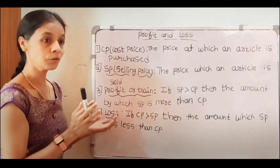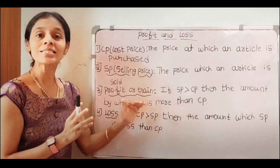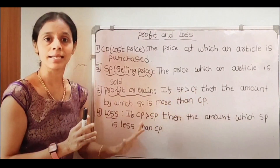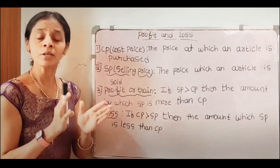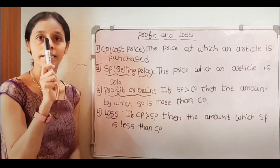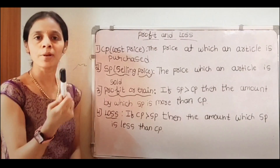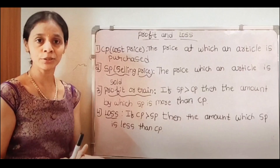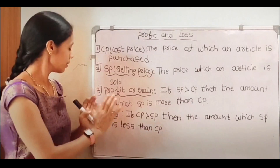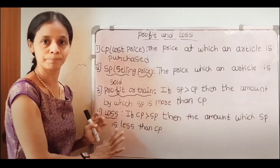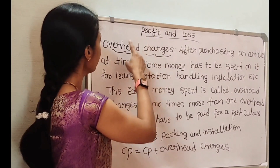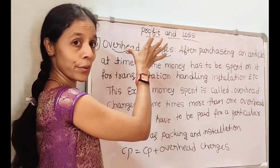Next we consider loss. If CP is greater than SP, then the amount by which SP is less than CP — this situation we call loss. For example, the cost price of this marker is 10 rupees, and if this marker is sold for 7 rupees, then in this situation we call it a loss of 3 rupees. That 3 rupees we call loss.